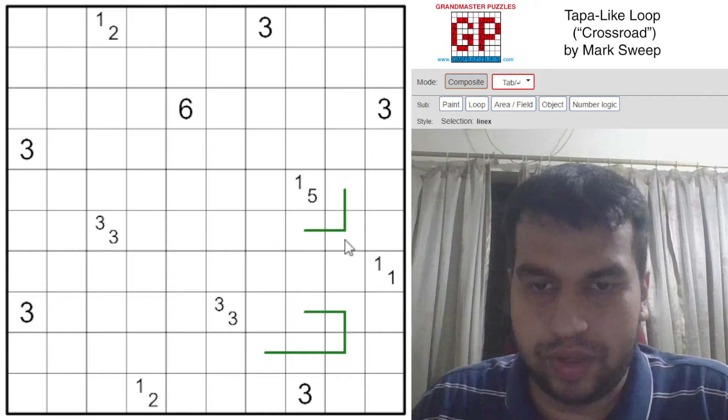And also this segment over here is clearly the 5 part of the 1-5. If it continues onward like this, it'll break the 3.